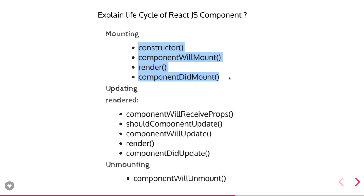In ES6, the mounting phase is: constructor, componentWillMount, render, and componentDidMount. Once rendered on the browser, when you start updating the state object, it becomes: shouldComponentUpdate, componentWillUpdate, render, and componentDidUpdate. When you remove the component from the DOM, that is the unmounting process. So there are three lifecycle phases: mounting a React component, updating the state and re-rendering, and removing the component from the DOM.